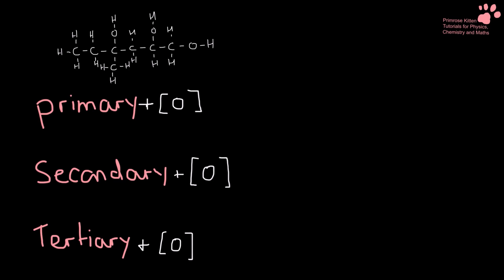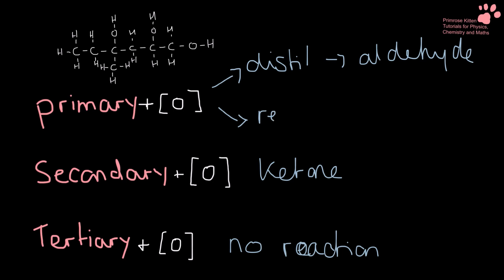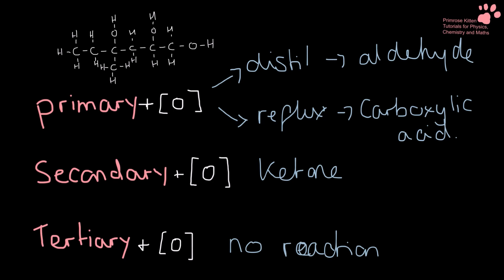Now when we oxidise primary, secondary and tertiary alcohols, lots of different things happen. Let's start with the easy one: we can't oxidise the tertiary alcohol, so there is going to be no reaction. When we oxidise a secondary alcohol, we are going to get a ketone. When we oxidise a primary alcohol, two different things can happen depending on how we heat it. If we distill it, we are going to get an aldehyde. If we reflux it, we are going to get a carboxylic acid. A student should be able to look at an alcohol and name and draw the aldehyde, the carboxylic acid, and the ketone that came from it. We'll do another video explaining this in more detail.